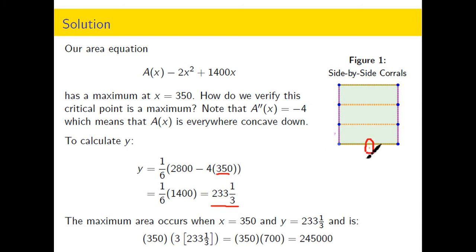And then this triple segment along the left side, each of those segments ought to be 233 and a third feet. When you multiply 3 times 233 and a third you get 700, so we multiply the 350, which is this dimension, times the 700, which is this dimension, to get the maximum of 245,000.